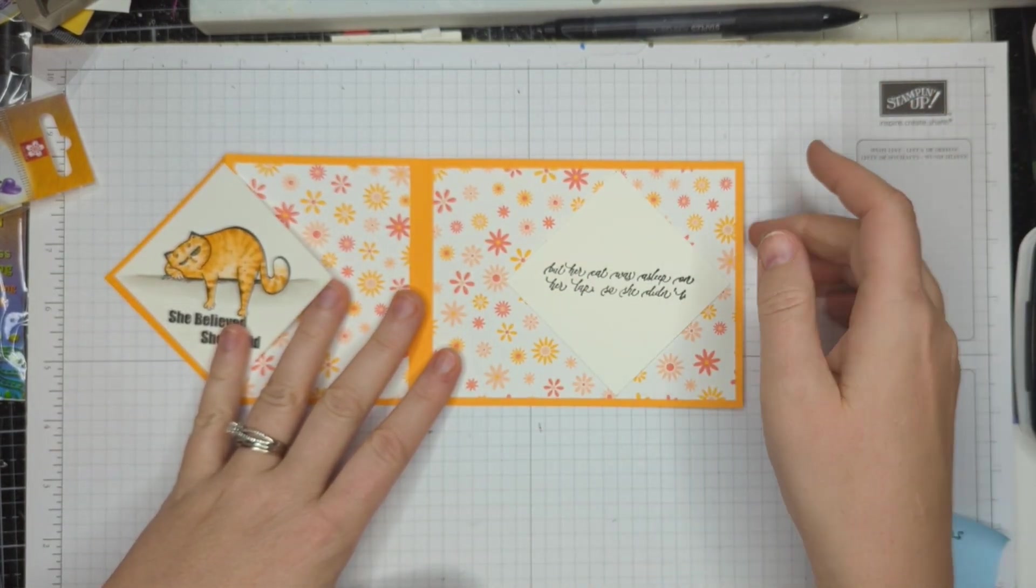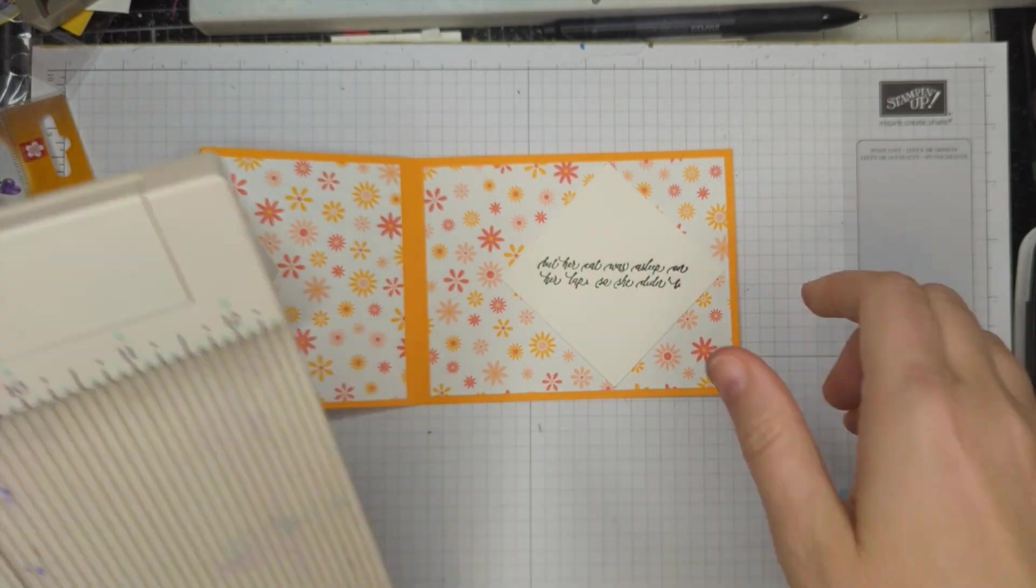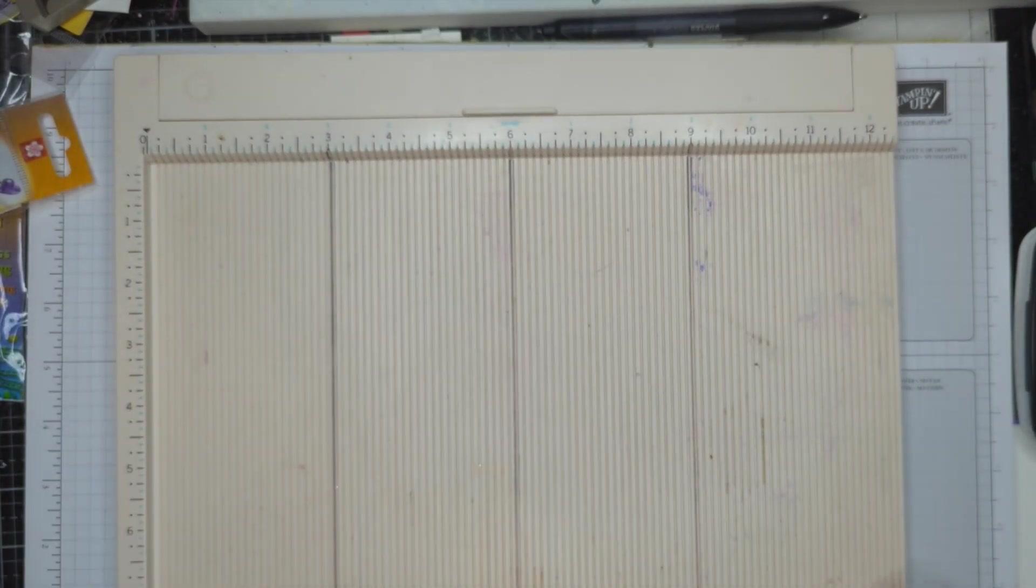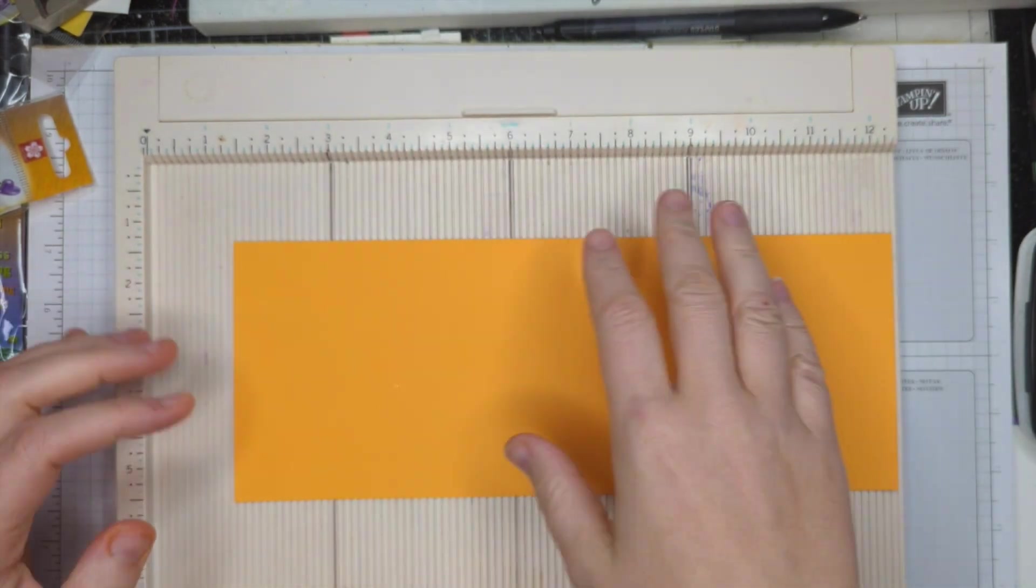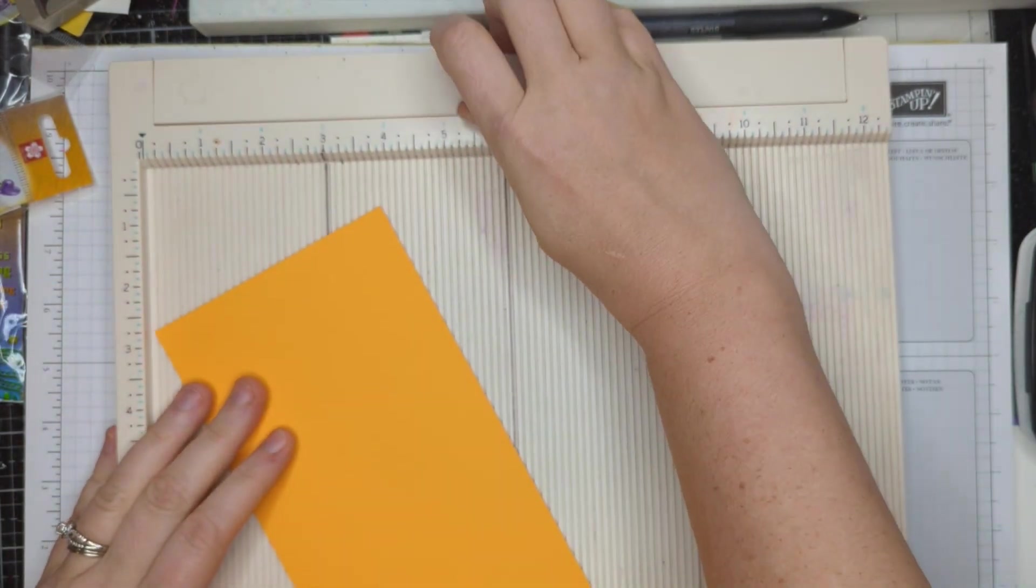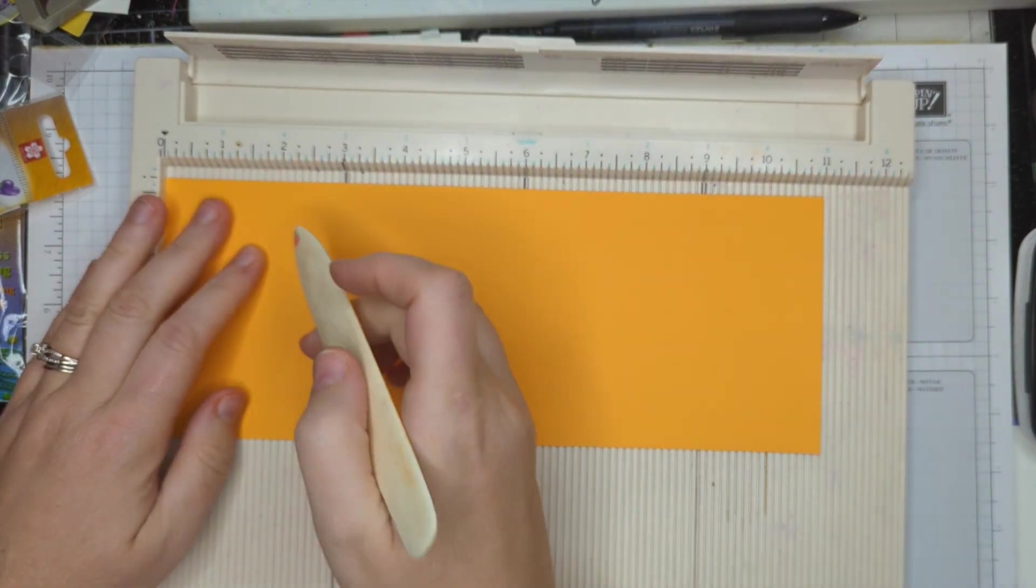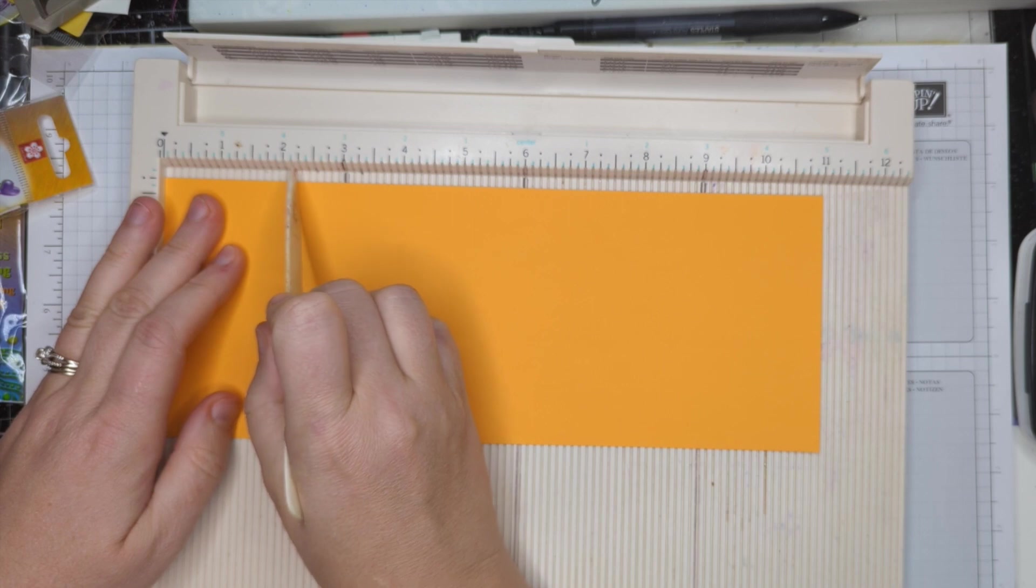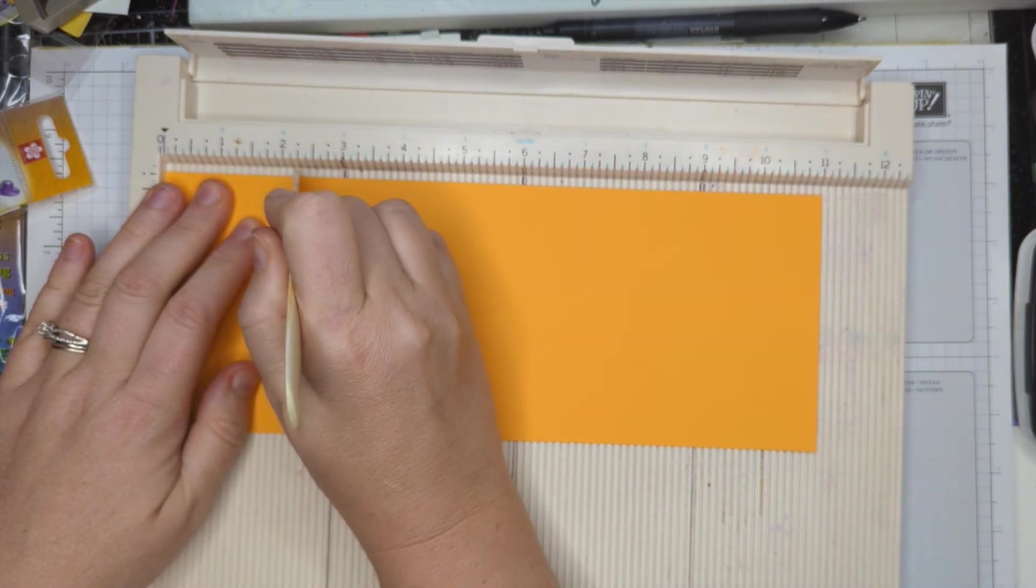This looks a little complicated, but it's actually very simple. So the first thing we want to do is get out our scoreboard. And I cut a piece of cardstock that is four and a quarter by 11 inches. So it's just a half sheet the long way. And the first thing we're going to do is we're going to score at two and an eighth.